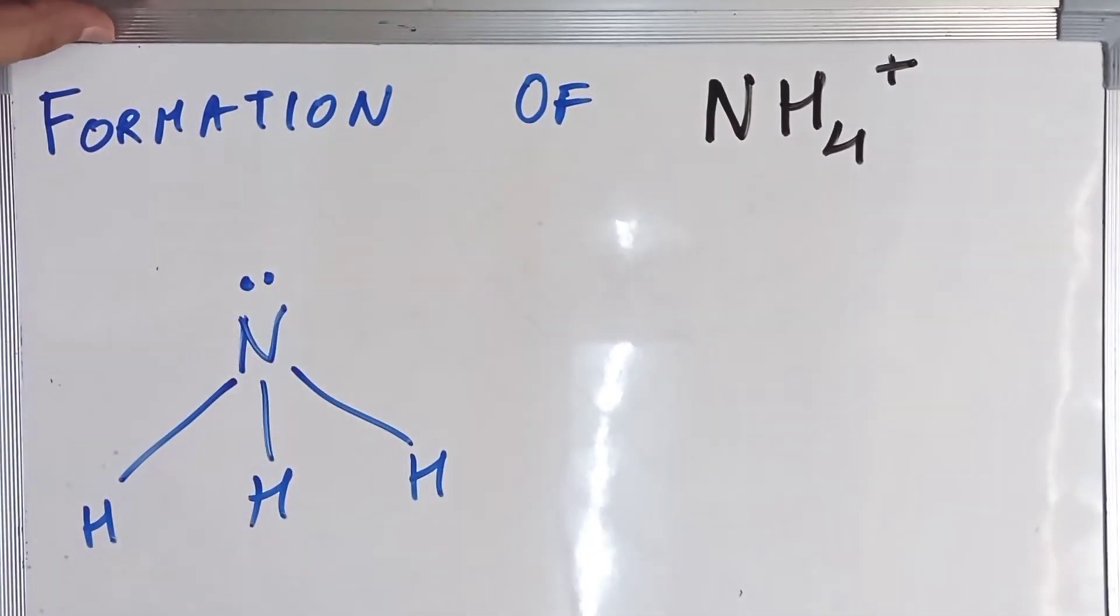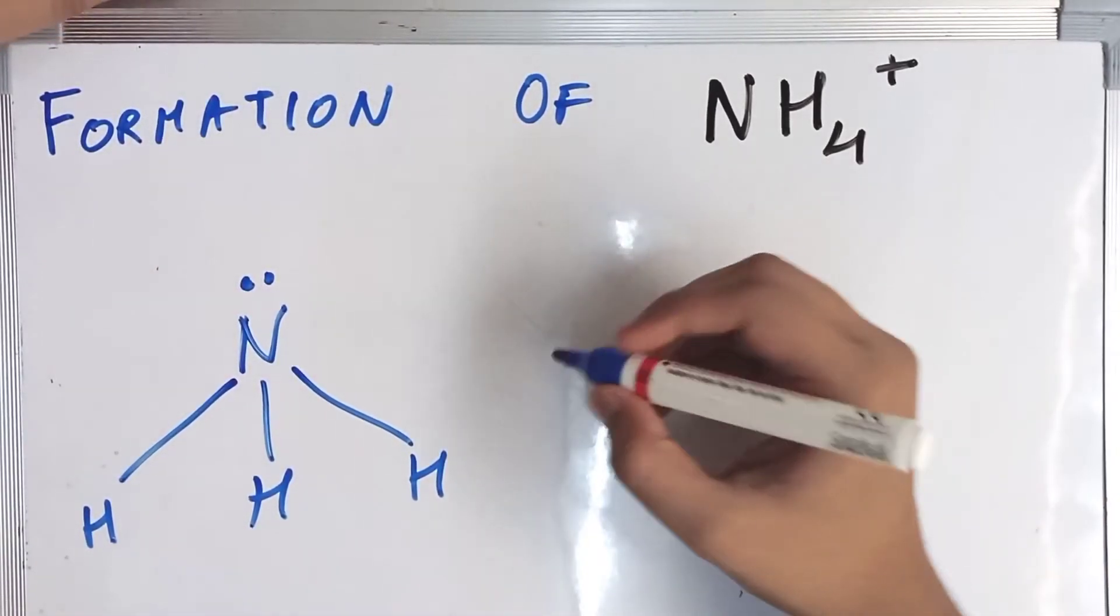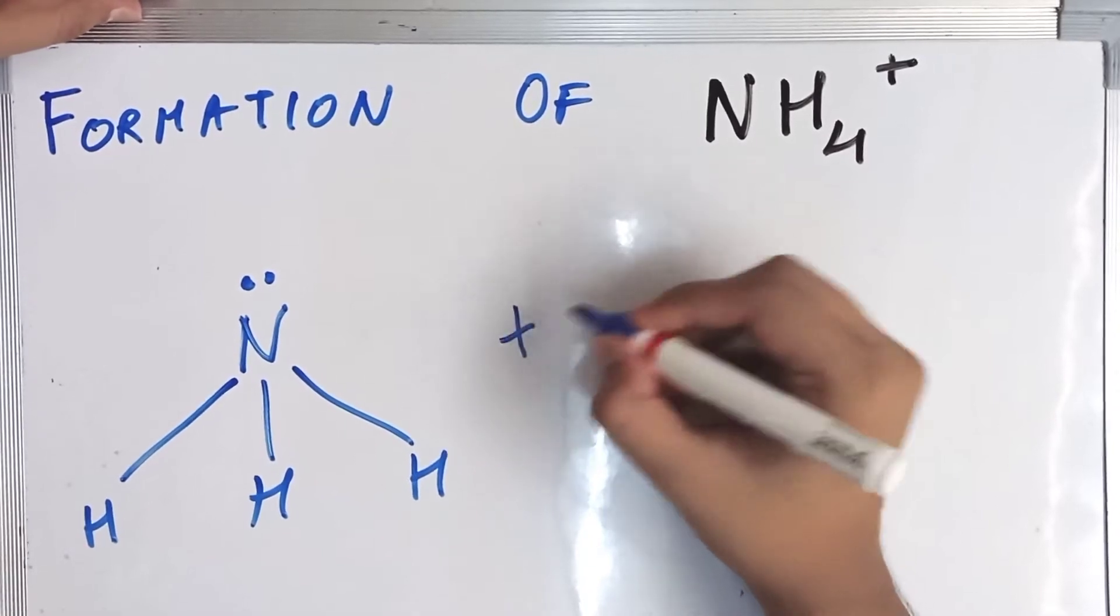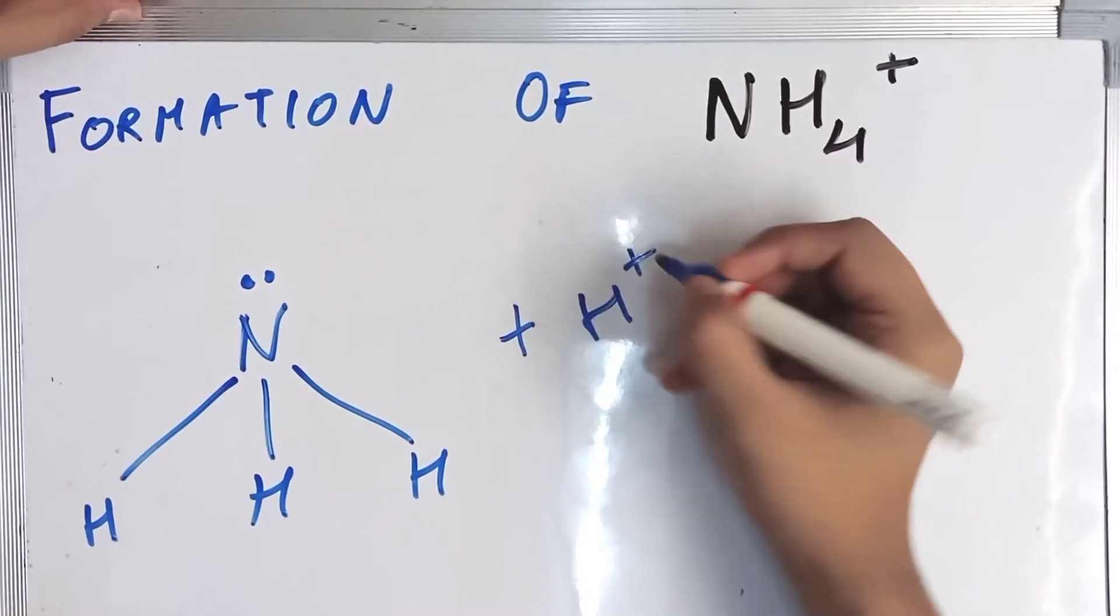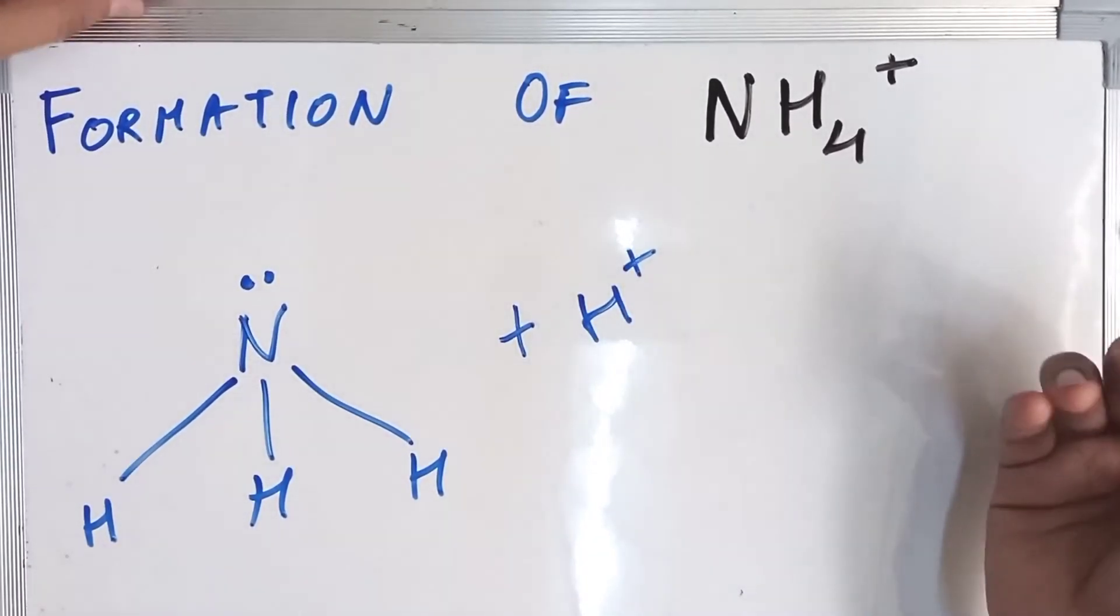So N-H-H-H. Now our NH3 is not complete; it has a lone pair. Now how is NH4+ formed? NH3 interacts with H+ ion.